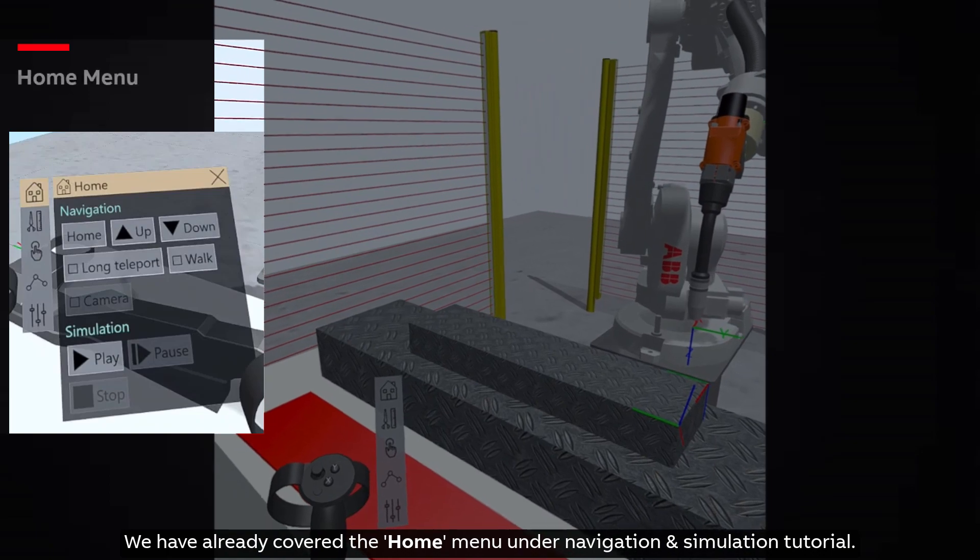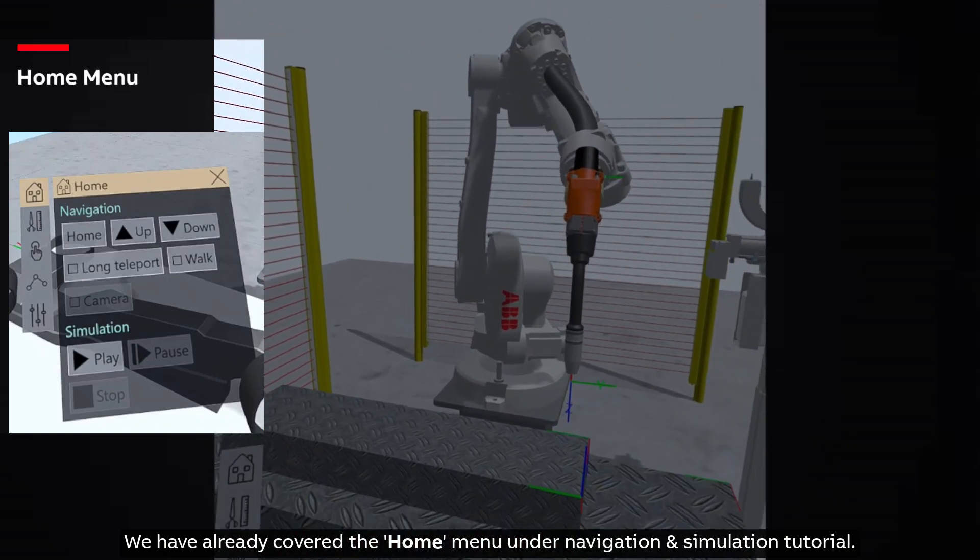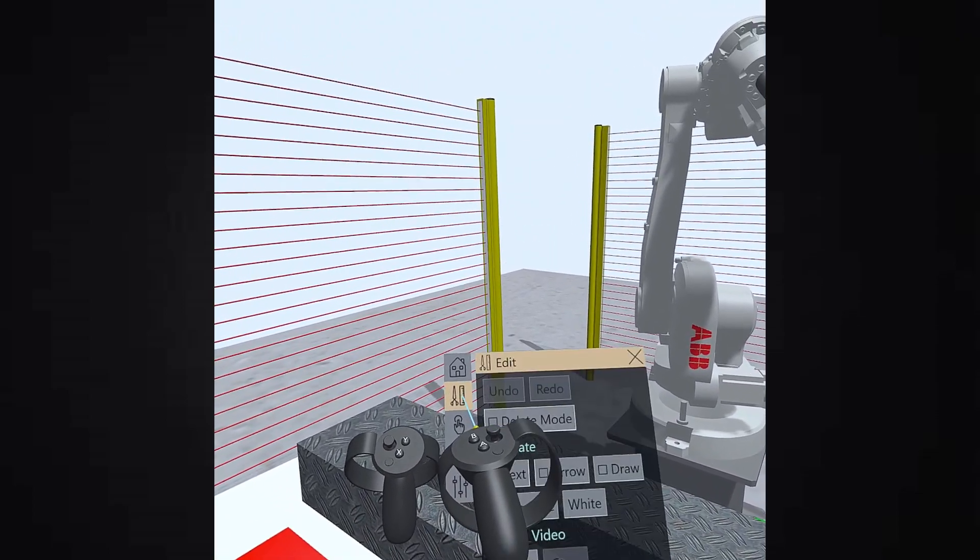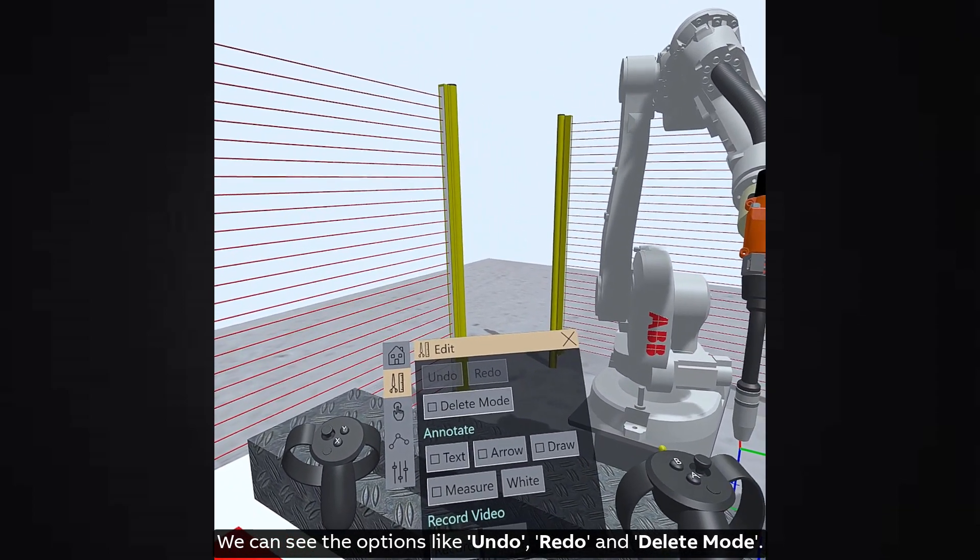We have already covered the home menu under navigation and simulation tutorial. Let's click on the second icon which is the edit menu. We can see the options like undo, redo and delete mode.